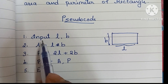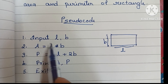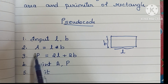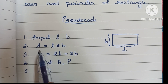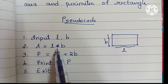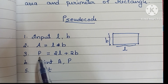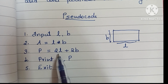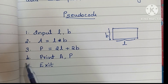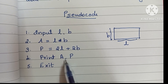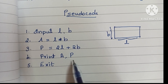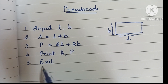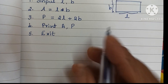To recap: first, input L and B values — that is length and breadth. Next, find area using formula A = L × B. Then find perimeter using P = 2L + 2B. Finally, print A and P, where A is the area and P is the perimeter of the rectangle.